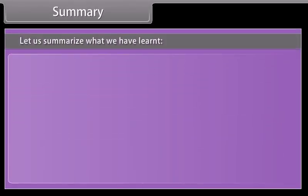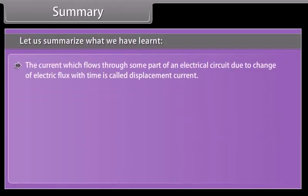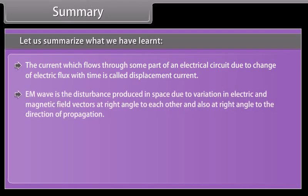Summary. Let us summarize what we have learned. The current which flows through some part of an electrical circuit due to change of electrical flux with time is called displacement current. EM wave is the disturbance produced in space due to variation in electric and magnetic field vectors at right angle to each other and also at right angle to the direction of propagation.